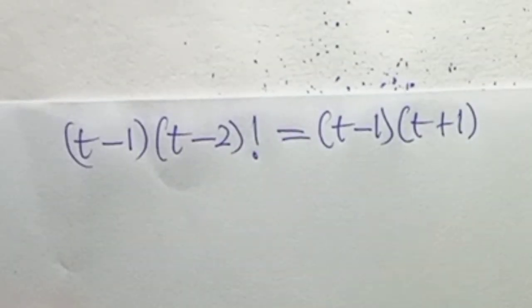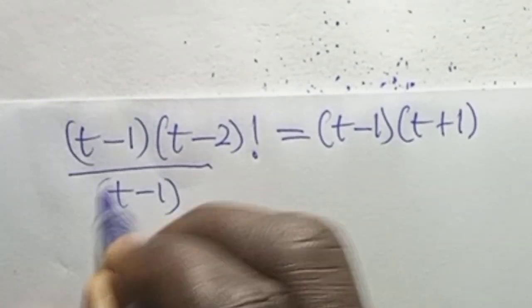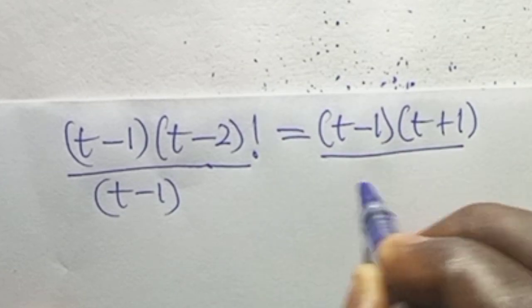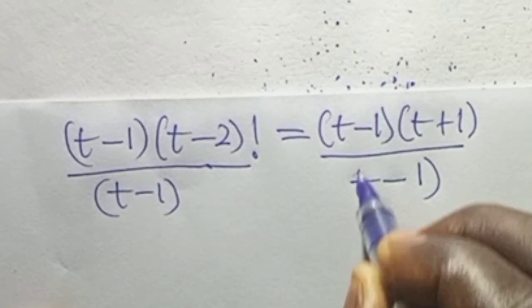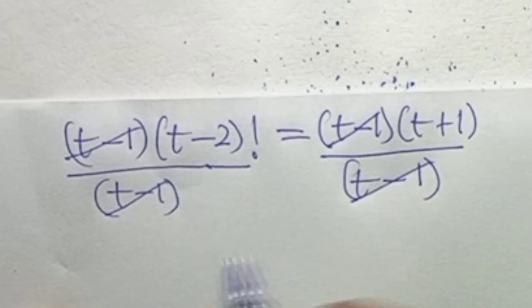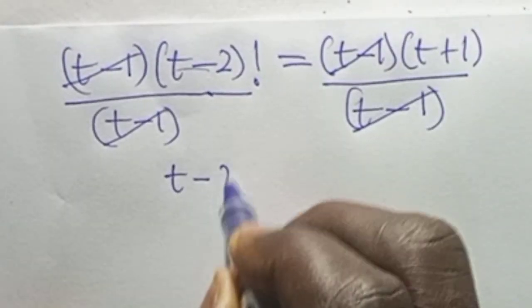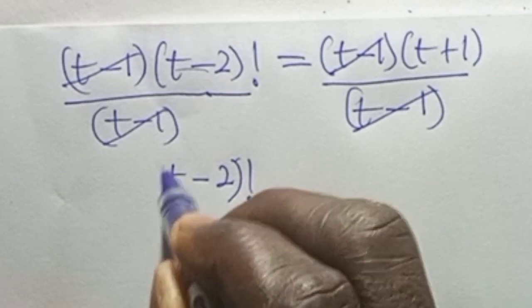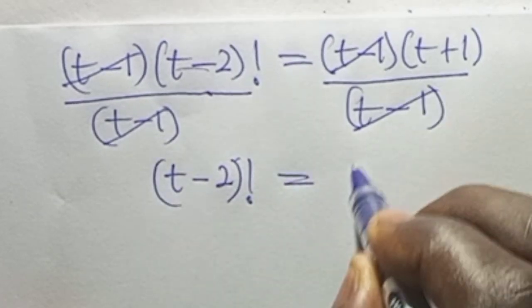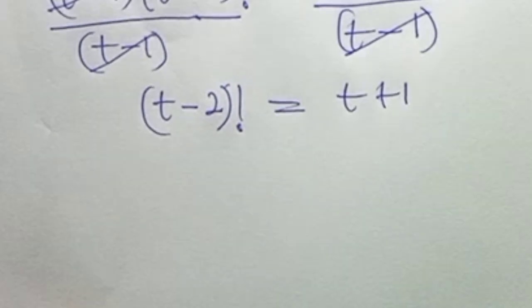We have (t minus 1) on both sides, so we divide both sides by (t minus 1). The (t minus 1) cancels from both sides, and what remains is: (t minus 2) factorial equals t plus 1.